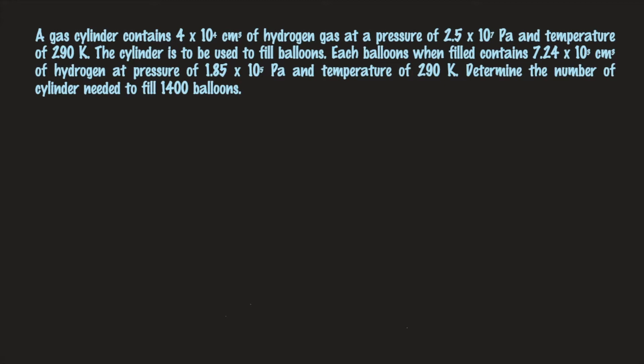Question number 1. A gasoline cylinder that contains 4×10⁴ cm³ of hydrogen at a pressure of 2.5×10⁷ Pascal and temperature of 290 Kelvin. The cylinder is to be used to fill balloons. Each balloon when filled contains 7.24×10³ cm³ of hydrogen at a pressure of 1.85×10⁵ Pascal and temperature of 290 Kelvin. Determine the number of cylinders needed to fill 1,400 balloons.